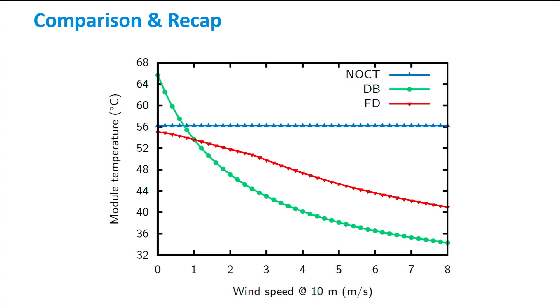In this last slide, we compare the reported three models by plotting the temperature of the module as function of the wind speed. As you can see, the NOCT model does not show any change because it is independent from the wind speed. The Duffy Beckman model, which introduces wind dependency, trends quickly towards lower values, overestimating the wind effect.